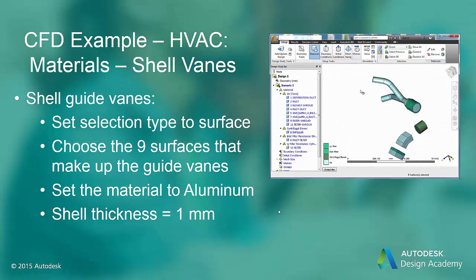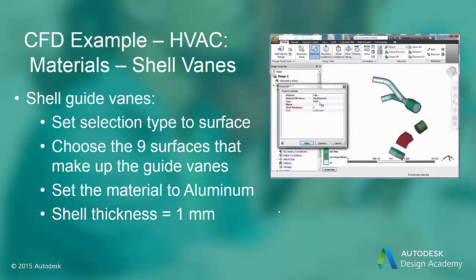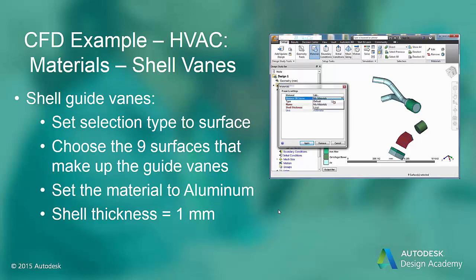To assign the guide vanes as shells, change the selection type on the top ribbon to surfaces, then select the nine surfaces that comprise the three guide vanes. You may have to hide the volumes around the guide vanes to be able to select these surfaces. The guide vanes are one millimeter thick aluminum. To find the aluminum material, go back to the default material database where aluminum is available.